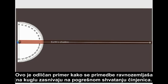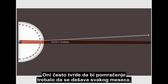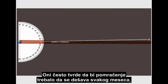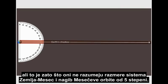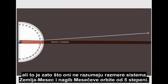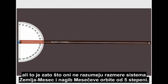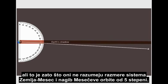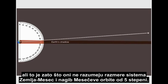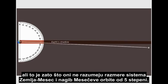This is a great example of how flat Earthers' objections to the globe are based on a misunderstanding of the facts. They often claim an eclipse should happen every month, but this is because they do not understand the scale of the Earth-Moon system and the 5-degree tilt of the Moon's orbit.